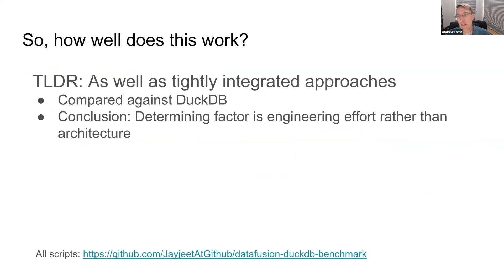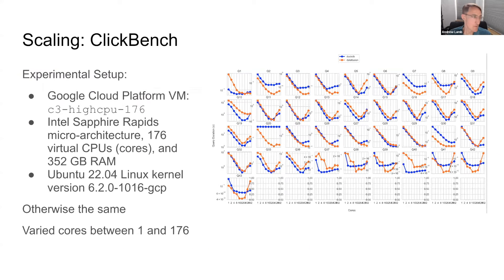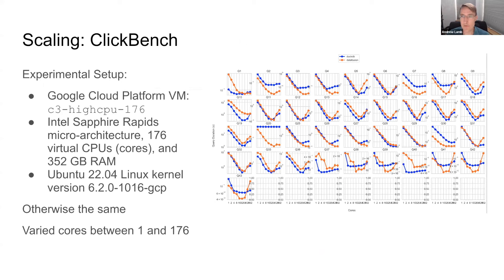To find out how well it works, we compared DataFusion against DuckDB — basically the current best example of a well-integrated single-node database system operating on local files. Our conclusion is that DataFusion's architecture is just fine: we basically get similar performance to DuckDB, and the difference is essentially engineering effort. Sometimes DataFusion is faster, sometimes DuckDB is faster.